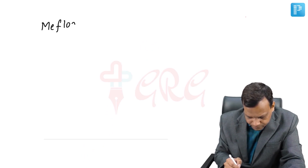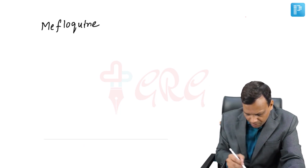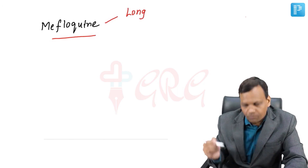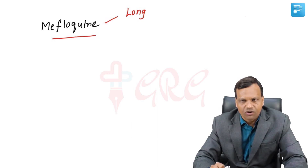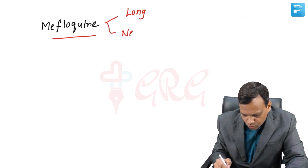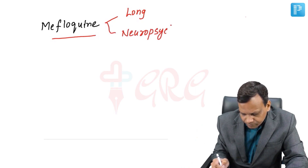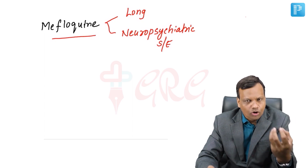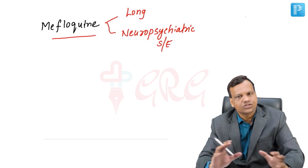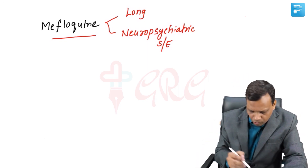Special points about mefloquine: it is a very long-acting drug and was previously used as a single-dose treatment (now combination therapy is preferred). Mefloquine can cause neuropsychiatric side effects and is therefore contraindicated in patients with neurological diseases like seizures/epilepsy and psychiatric diseases like depression.